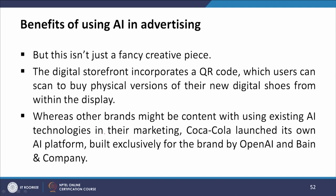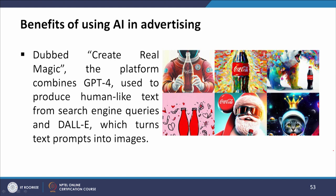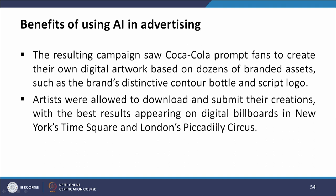Whereas other brands might use existing AI technologies in their marketing, Coca-Cola launched its own AI platform built exclusively for the brand by OpenAI and Bain and Company. Dubbed 'Create Real Magic,' the platform combines GPT-4, used to produce human-like text from search engine queries, and DALL-E, which turns text prompts into images. The campaign saw Coca-Cola prompt fans to create their own digital artwork based on branded assets such as the brand's distinctive contour bottles and script logo. Artists were allowed to download and submit their creations, with the best results appearing on digital billboards in New York's Times Square and London's Piccadilly Circus.